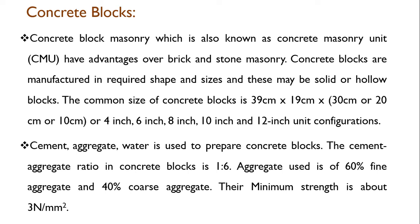For manufacturing cement concrete blocks, cement, aggregate, and water are used. The cement-to-aggregate ratio is 1:6, meaning 1 part cement and 6 parts aggregate. Within the 6 parts of aggregate, 60% is fine aggregate and 40% is coarse aggregate. The minimum strength is about 3 N/mm².